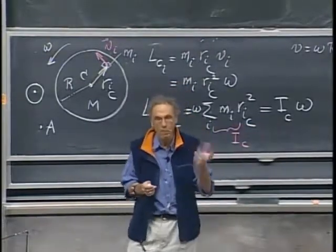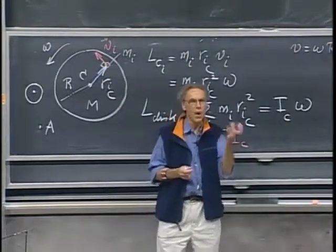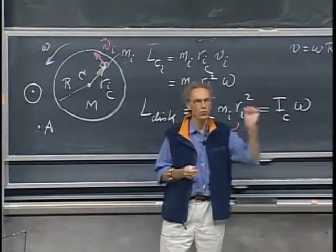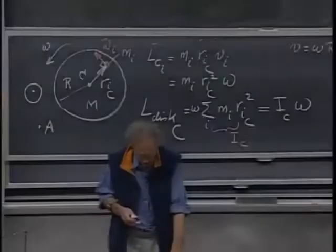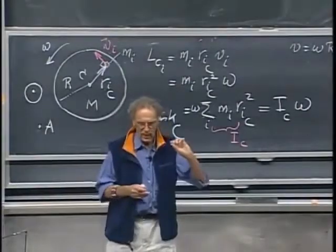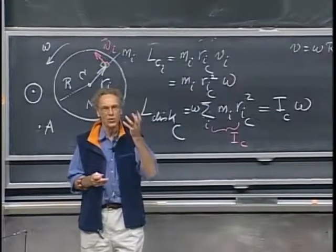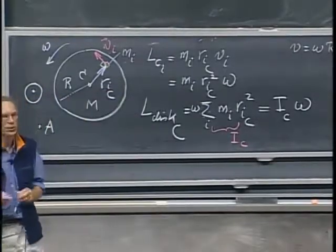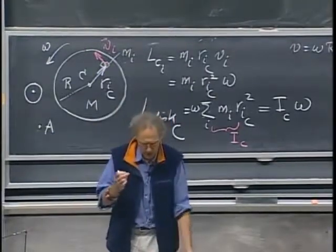And we call that the spin angular momentum. The spin angular momentum is an intrinsic property of an object, regardless of which point you choose relative to which you calculate the angular momentum. So in the case that an object is spinning about its center of mass, you no longer have to specify the point that you have chosen. You can really talk now about the angular momentum.